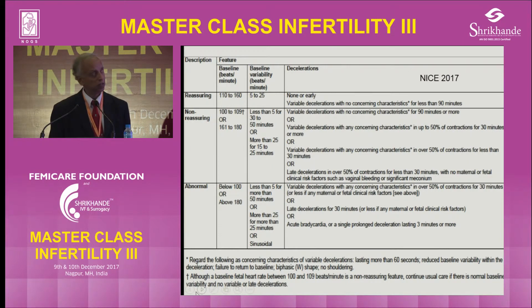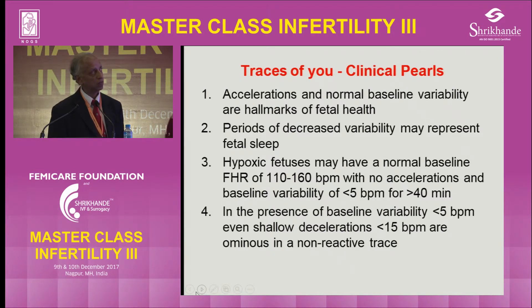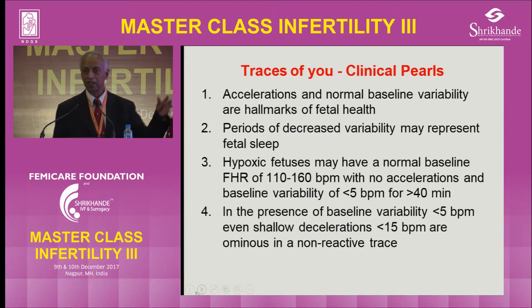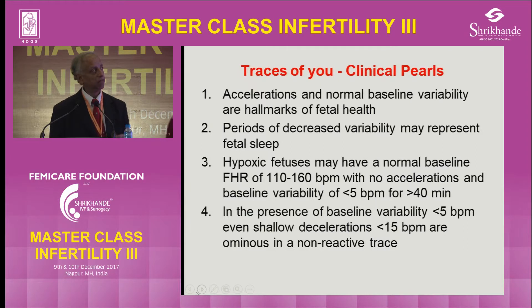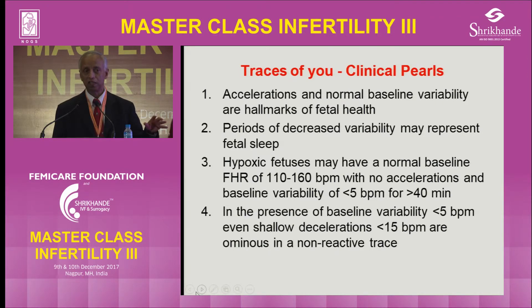I won't go through the NICE guidelines as they are almost the same. To summarize what we have discussed: accelerations and normal variability are the hallmark of fetal health, meaning the somatic and autonomic nervous systems are working well. Periods of decreased variability may represent fetal sleep — the fetus can accelerate then go to sleep, accelerate then go to sleep. A hypoxic fetus may have a normal baseline rate with no accelerations and reduced variability for more than 40 minutes. If contractions are coming but there are no decelerations, you can wait longer.